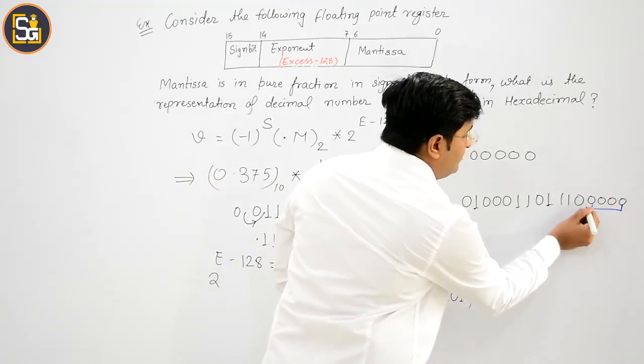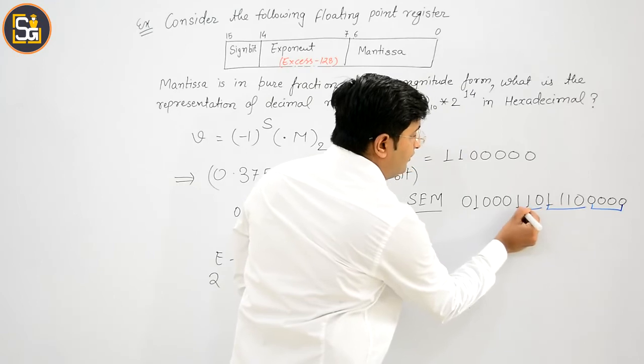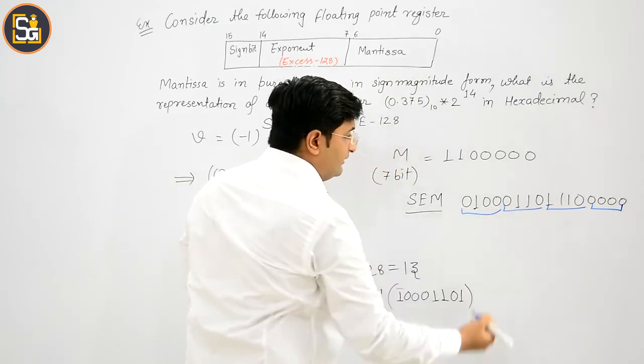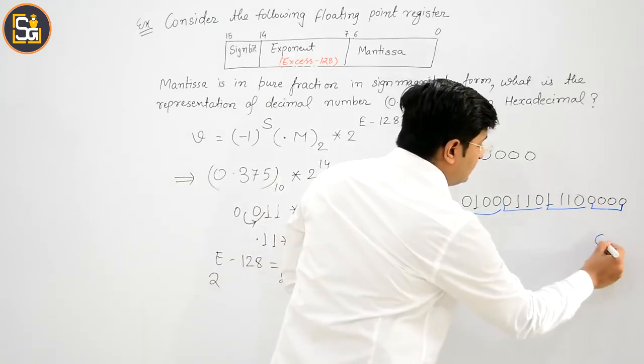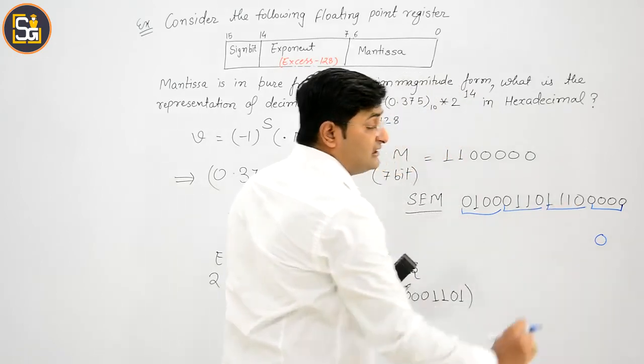Now, यह आपका 16 bit register हो गया. अब आप hexadecimal चाहिए, तो 4-4 की क्या करिए - pairing करिए. Now, it is 0. Now, it is 14.